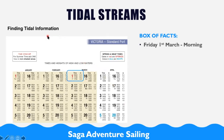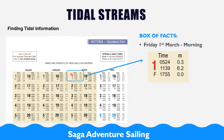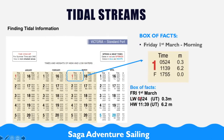Finding tidal information — most important is that you do your box of facts. Let's say we want to go on the 1st of March in the morning. We find the data, make a line or copy everything down in the notebook as a box of facts. What time is low water, the time zone UT, and the height of the tide — 0.3. High water is 1139 UT, 6.2. We calculate the range — the difference between high and low water — which is 5.9, meaning it's a spring tide, shown in red.